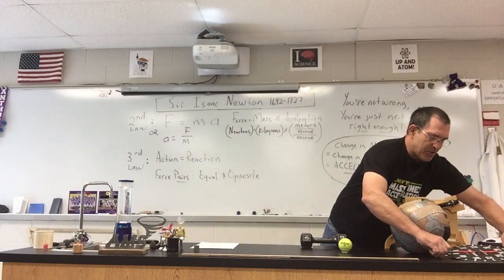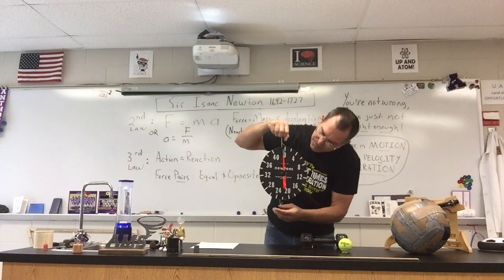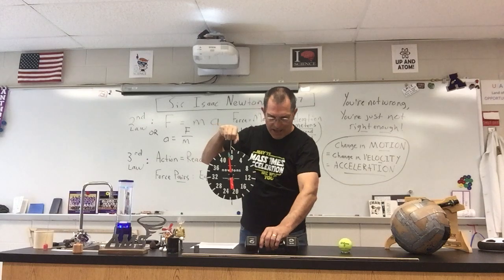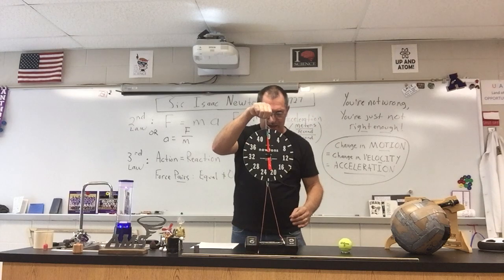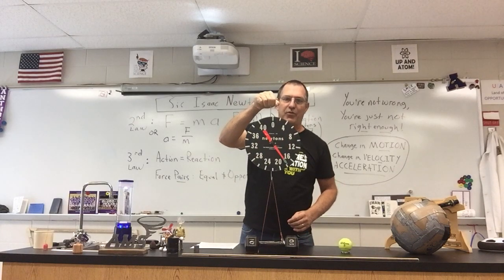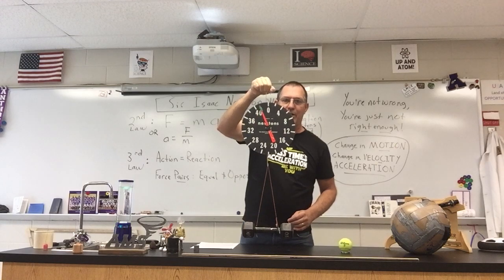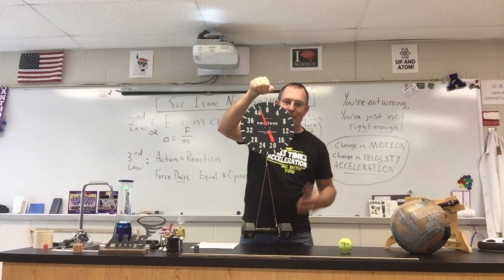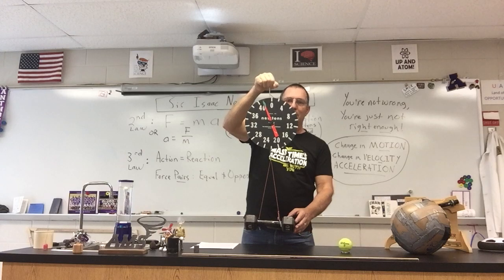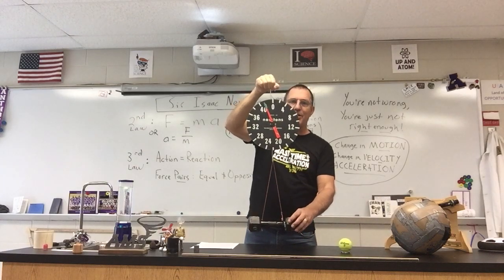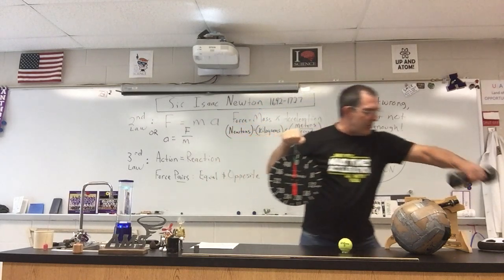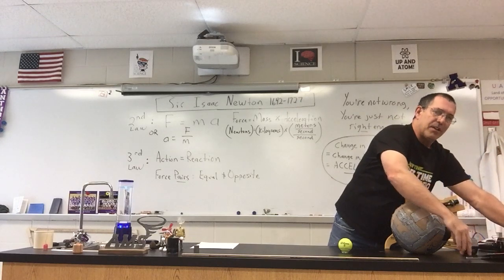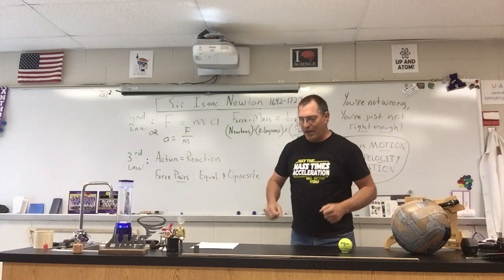I have a scale here that measures in newtons. I'll put a barbell here that weighs 10 pounds. Let's figure out how many newtons that is — about 40, right? Four newtons per pound, times ten, is about 40 newtons. That's a quick way to convert: if you want to know how many newtons you weigh, take your pounds, multiply by four, and there you are.